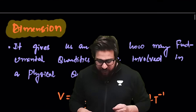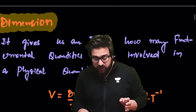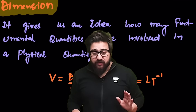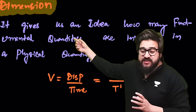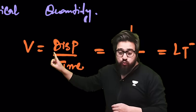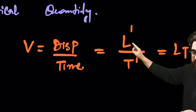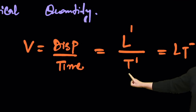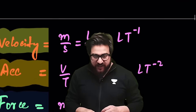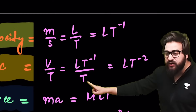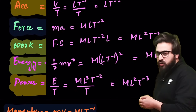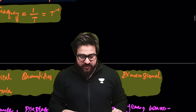What are dimensions? Dimensions give us an idea of how many fundamental quantities are involved in a physical quantity. For velocity — displacement upon time — you write L¹/T¹ = LT⁻¹. For acceleration — velocity upon time — it becomes LT⁻². You can check the dimensional formulas for force, work, energy, power, momentum, etc. from the table shown.